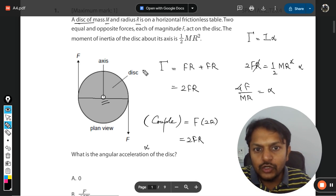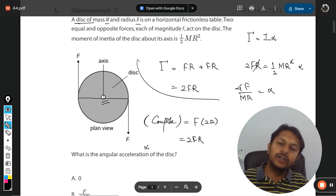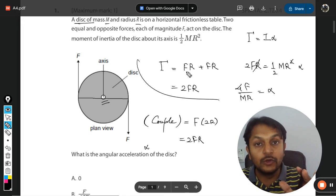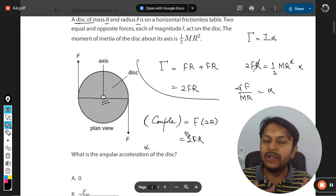If you know what a couple is, you can use this formulation and find alpha using both methods. This is how we do this question.